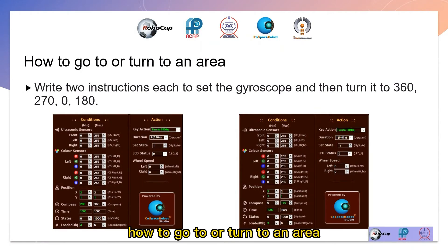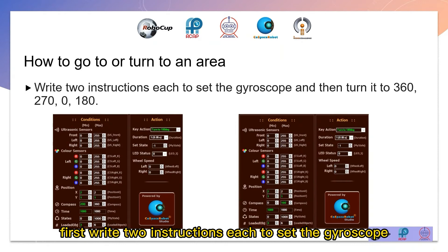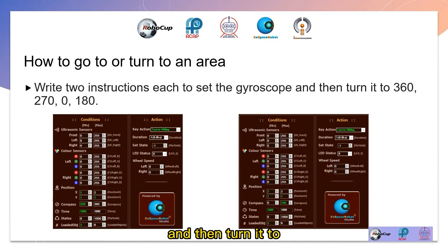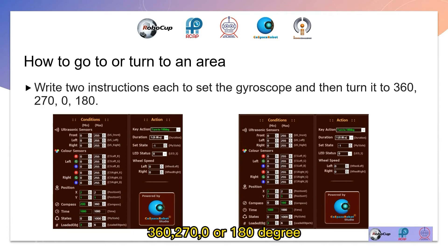How to go to or turn to an area? First, write two instructions each to set the gyroscope, and then turn it to 360, 270, 0, or 180 degrees.